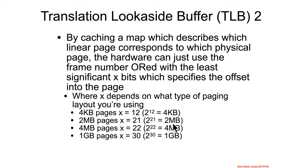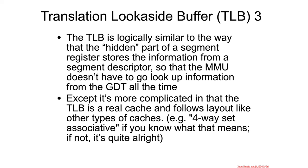Once the MMU gets a TLB hit for a virtual address, it takes the bottom 12, 22, or 30 bits and ORs those together with the physical address from the cache. The TLB is trying to achieve the same goal as the segmentation registers' hidden portion — avoiding constant table lookups. Whereas segmentation was relatively simple and set up once, page tables are much more complicated.